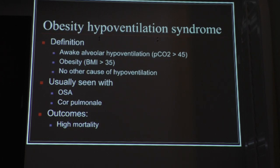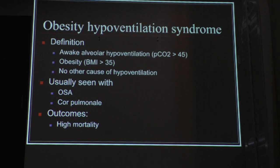Lastly, obesity hypoventilation syndrome — the Pickwickian syndrome. These patients have chronic hypercapnia and post-hypercapnia metabolic alkalosis. BMI is usually greater than 35 — I have a patient with a BMI of 72. There is no other cause of hypoventilation. You see it in severe OSA or cor pulmonale, and the outcomes are pretty bad. This disease carries a pretty high mortality.